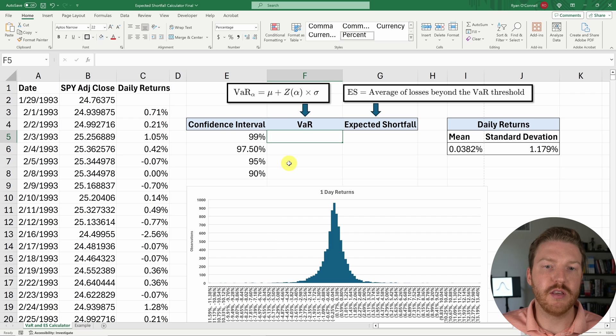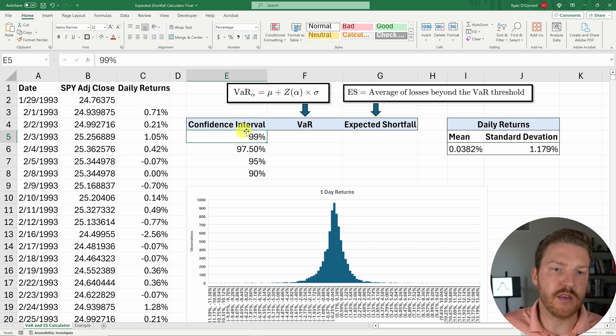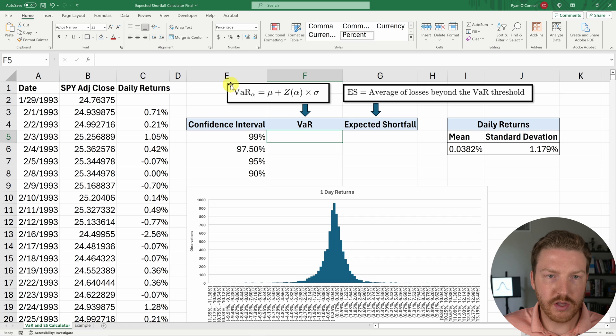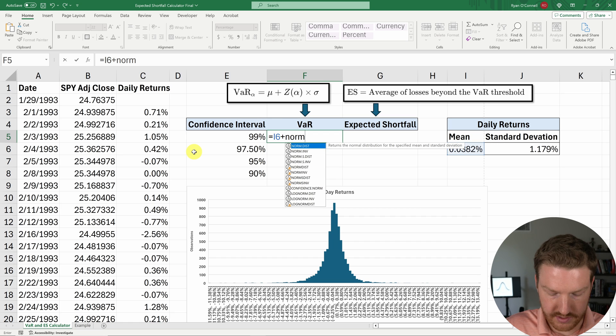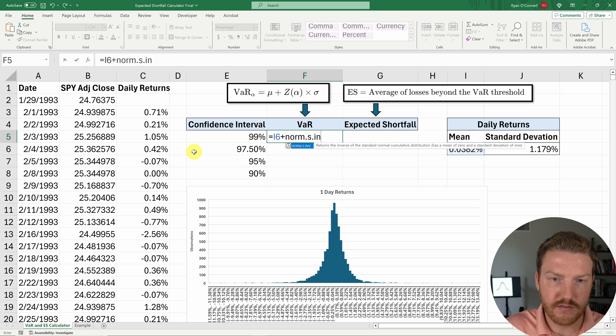Now we really have everything we need to calculate the one day VaR. And we'll start with the confidence interval for the 99th percentile, which is going to be further out into the tails than the other ones. So we'll use this formula, which is equal to the mean plus the Z score for the confidence interval, which is just NORM.S.INV.